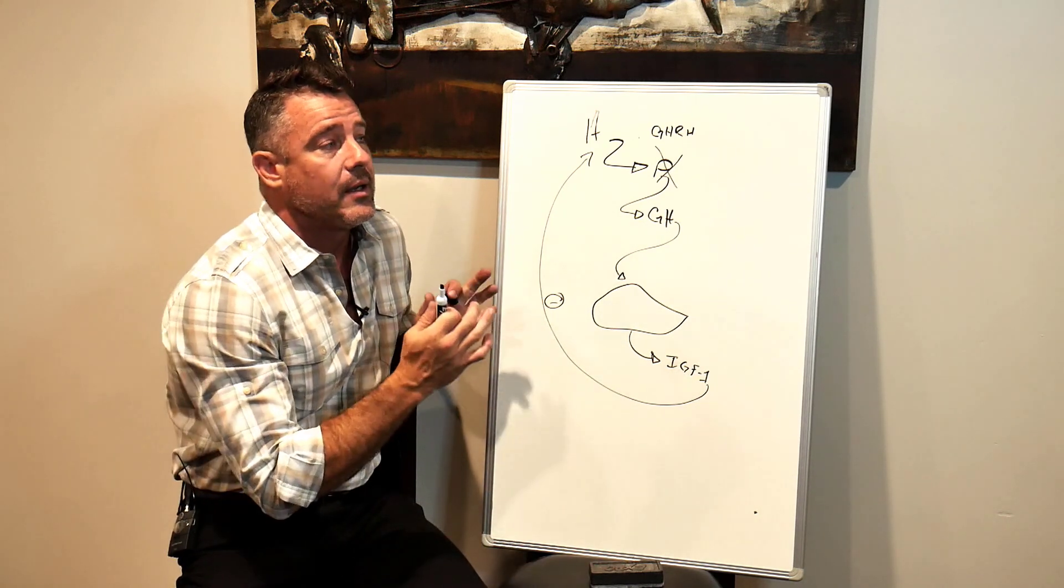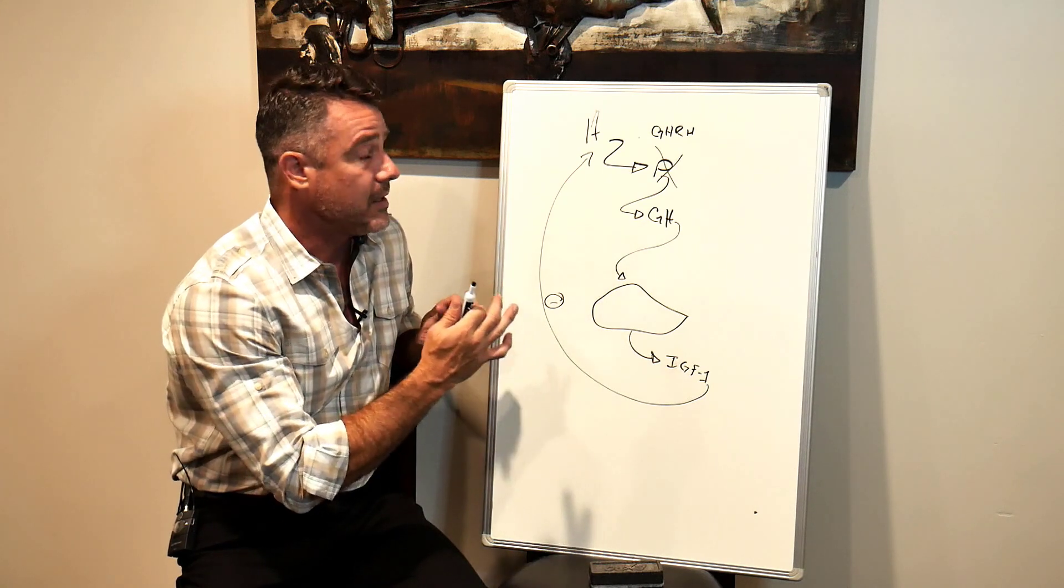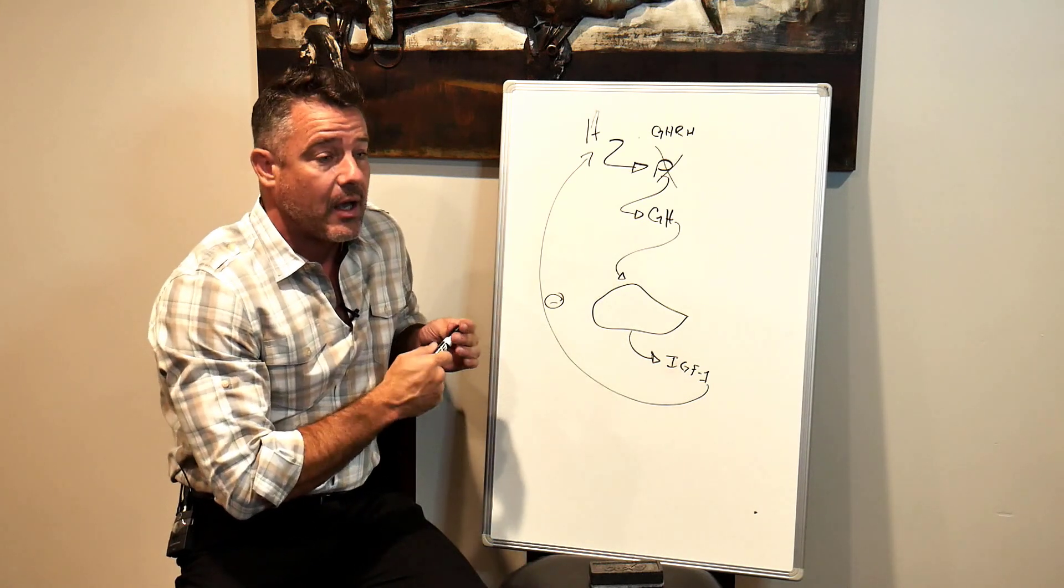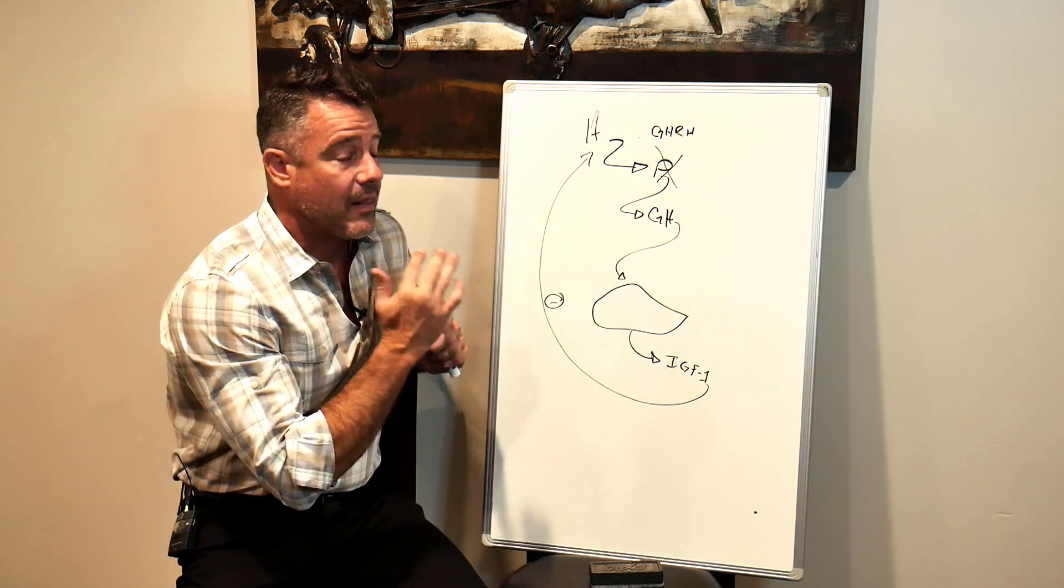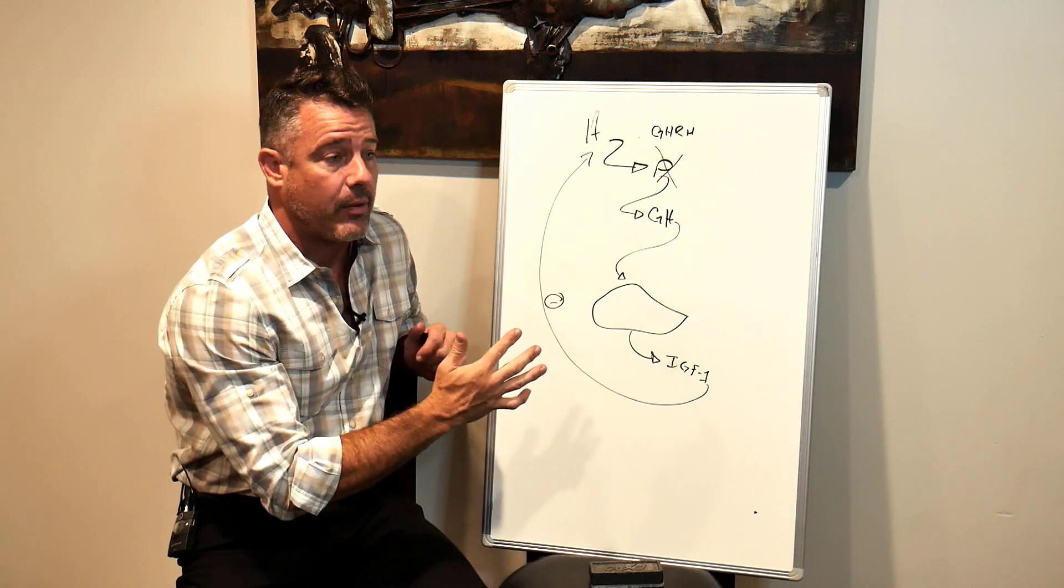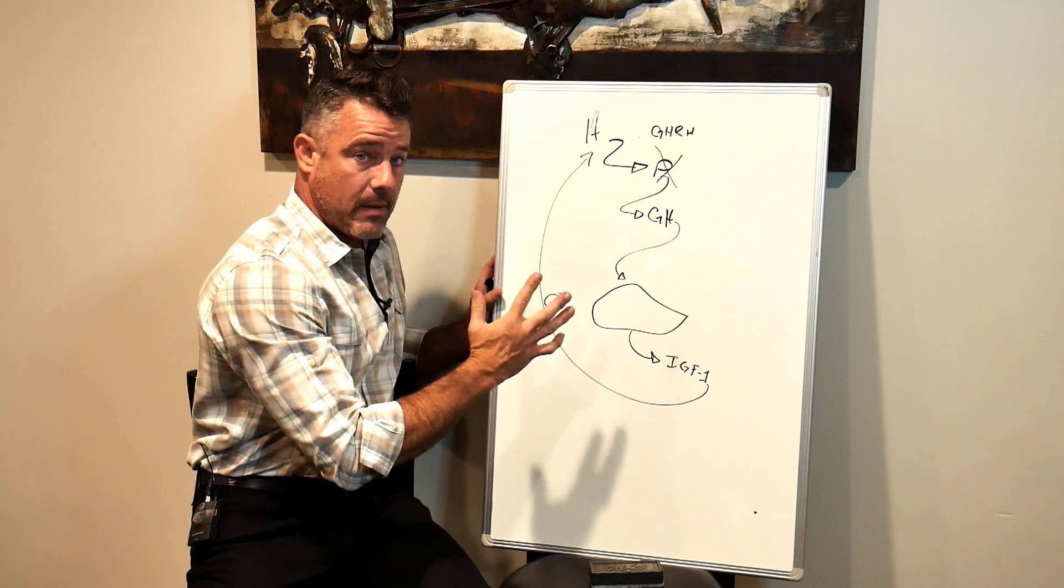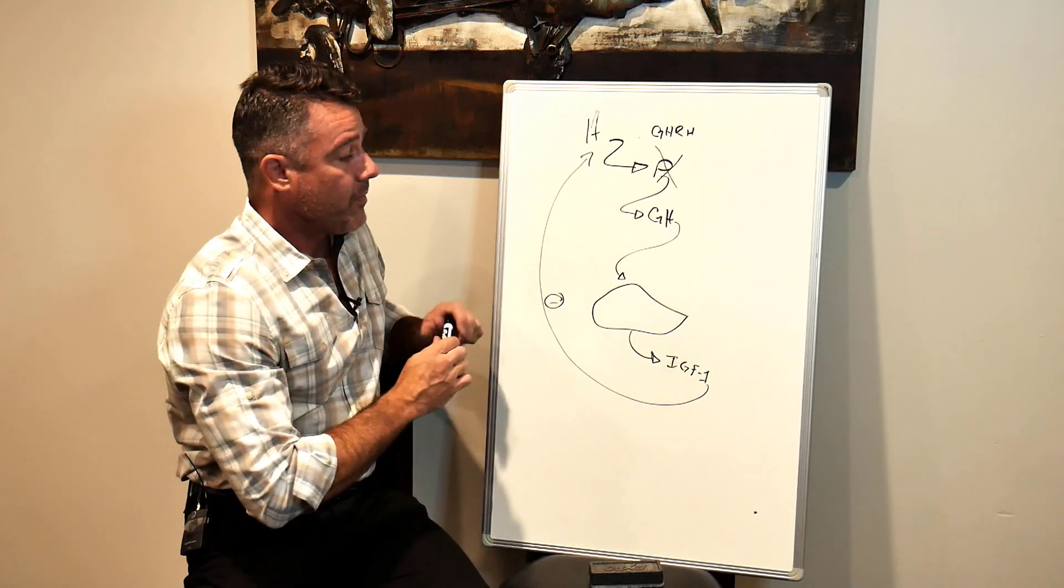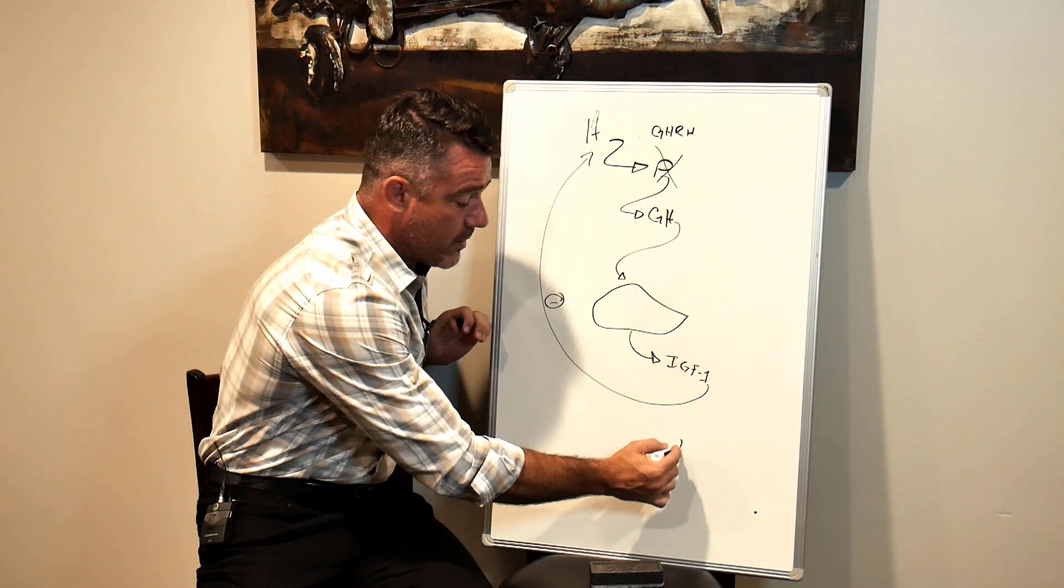And by the way, this is incredibly simplified. This is an elementary explanation of this process. There are a lot more moving pieces. It's a very complex process, but just for the sake of this video, we'll keep it right there. Now, I almost forgot something. There's another stimuli.